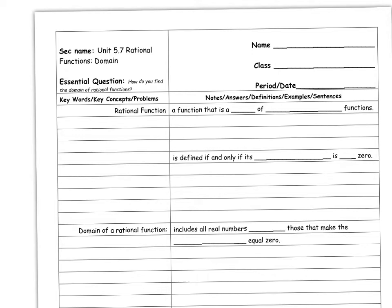We're going to talk about the domain. Our first chunk of graphing rational functions is finding the domain of a rational function. A rational function is a function that is a ratio of two polynomial functions — so r(x) equals p(x) divided by q(x), just two different polynomial functions.